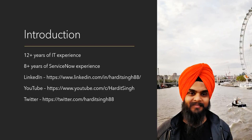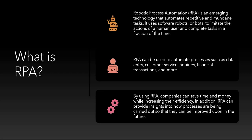What is RPA? RPA is an emerging technology that automates repetitive and mundane tasks. It uses software robots or bots to imitate human actions — basically whatever a human being is doing, RPA is used to imitate those actions in an automated way. Those processes can be like data entry, customer service inquiries, financial transactions, and many more. By using RPA, companies can save a lot of time and money while increasing efficiency.